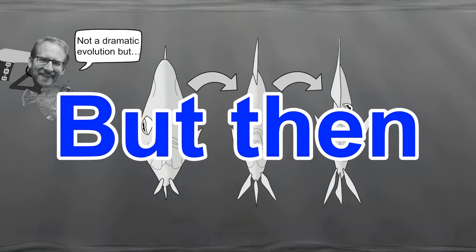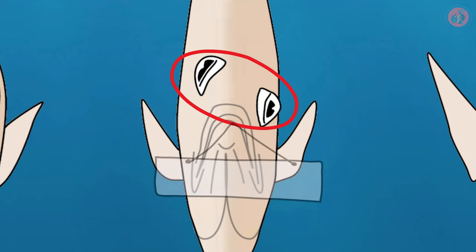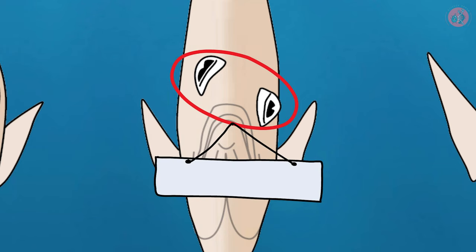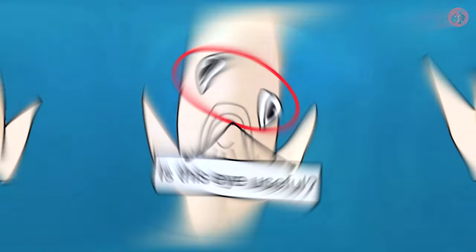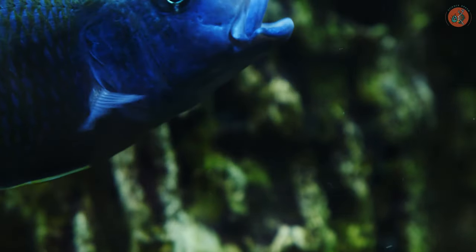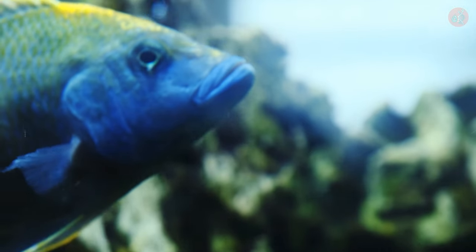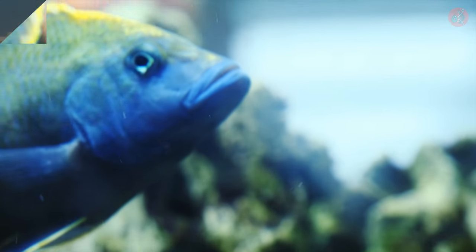But then, this raises a question. Given this gradual evolution, what survival benefit did their asymmetrical eyes offer that led to their natural selection? Scientists found a clue in a fish living in Africa called Nimbochromis livingstone.